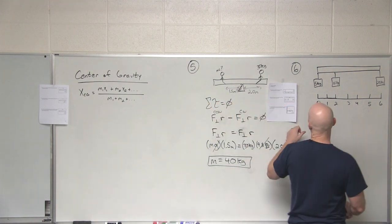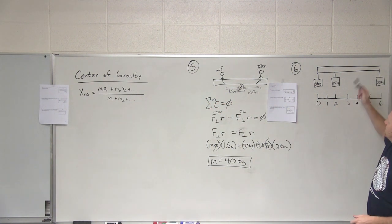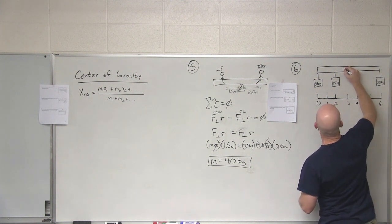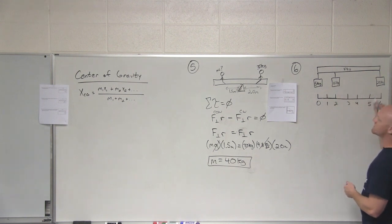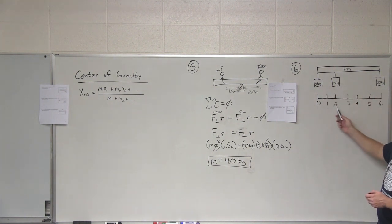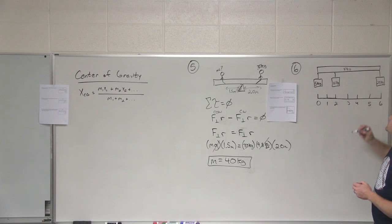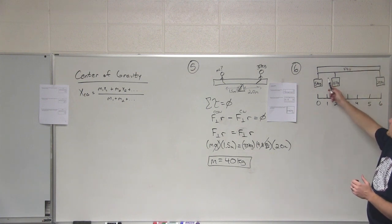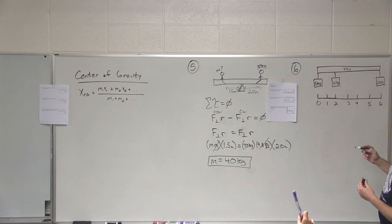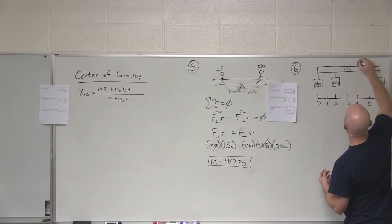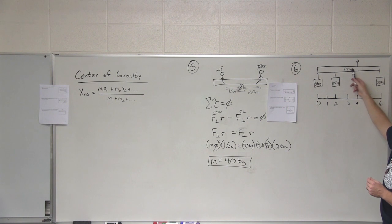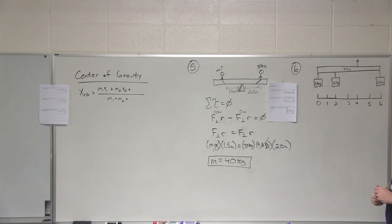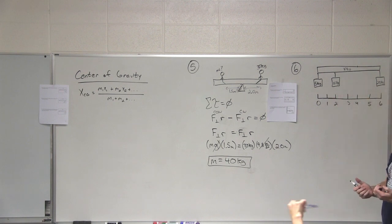We need that for problem number six. We have a 10-kilogram board with three masses hung from it: a 5-kilogram mass at position zero, a 10-kilogram mass at position two, and a 25-kilogram mass at position six. The question is: where do I place a rope to hang this board so it's in rotational equilibrium? Where would you say the center of mass is? Around four? Let's say we hung a rope right there.